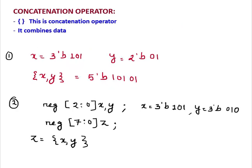This one is concatenation operator. It combines the data. If x equal to 3'b101 and y equal to this one, and if we write x and y in curly braces, it is combining these two data. So 3 bit and 2 bit, now it is 5 bit: binary 10101.